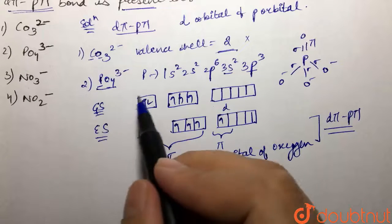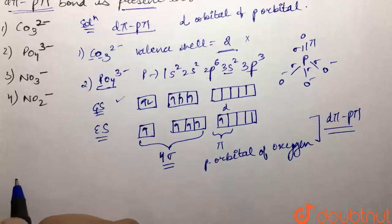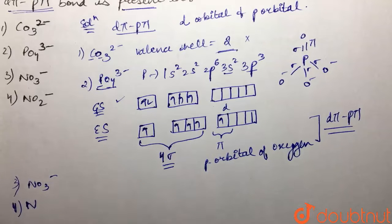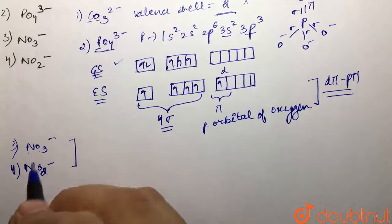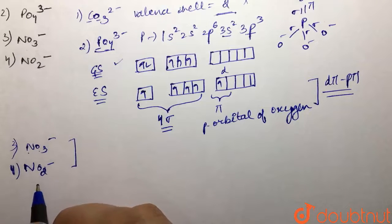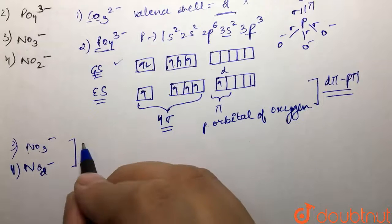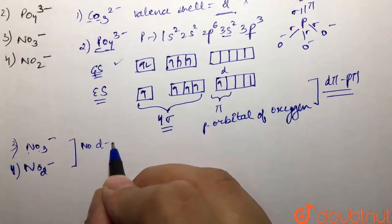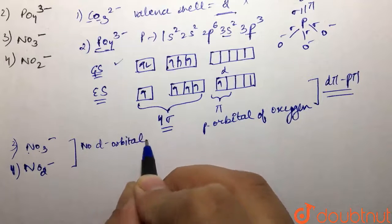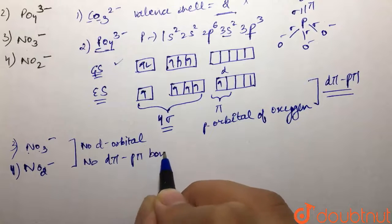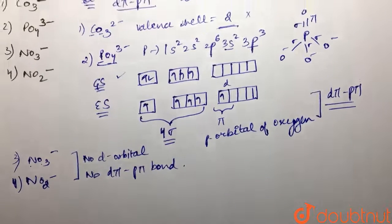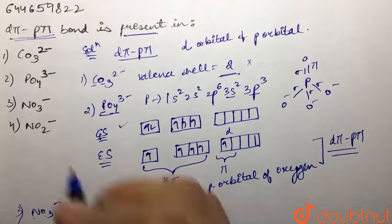Then if you talk about NO₃⁻ and the fourth option NO₂⁻, these both have nitrogen and oxygen with them, which belong to second period and hence do not have any d orbital. They do not have any d orbital, and hence no d-pi p-pi bond.